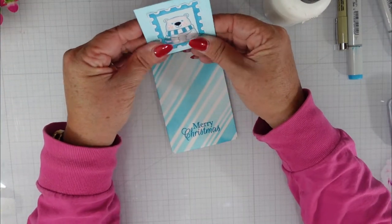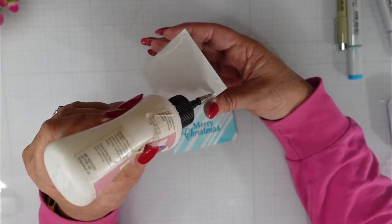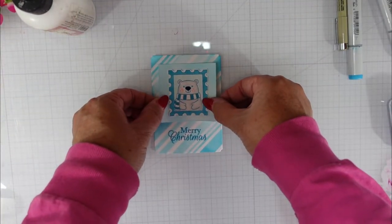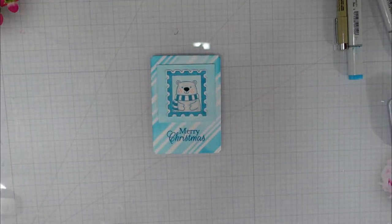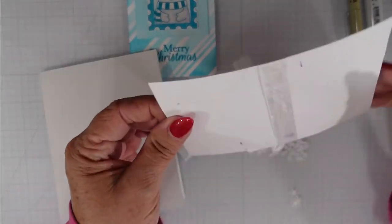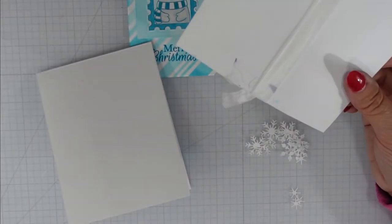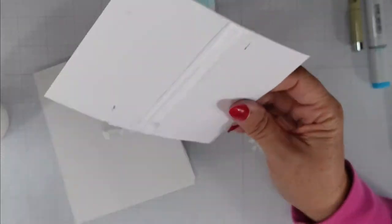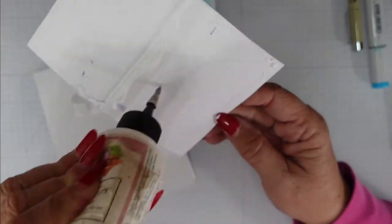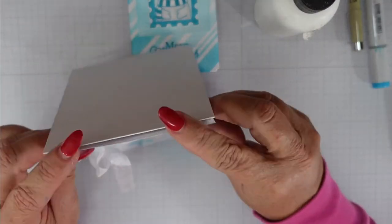I'm going to glue my bear to the square, and then of course I'm going to center this more towards the top of this panel. And then I'm going to bring in an A2 card base. So this is a top folding card base. It is four and a quarter by eleven, and then I scored it at the five and a half inch mark. I'm going to add some Art Glitter Glue to the back of this panel and I'm going to place it over the top of that card base.